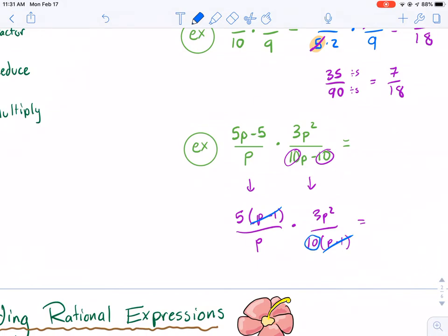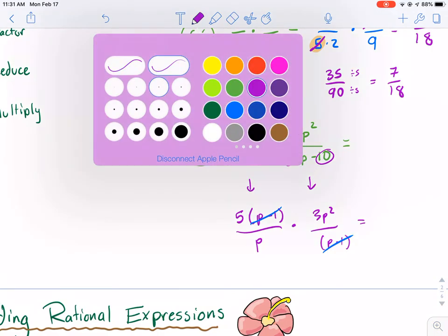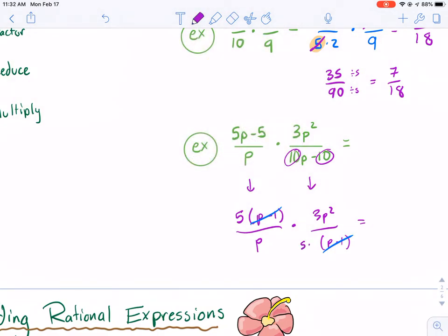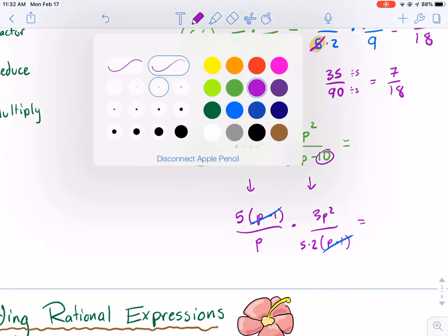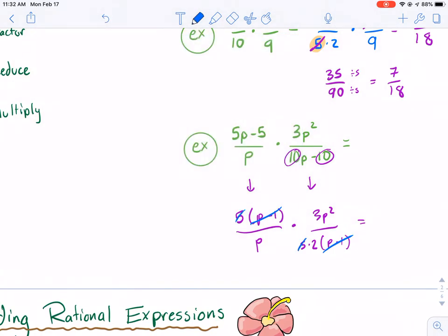And technically, we could have reduced this 10 to be what? 10 can be broken down to its prime factors, which is 5 times 2, which we can cancel the 5s. Now, if you're good, let me show you a different way to do this.